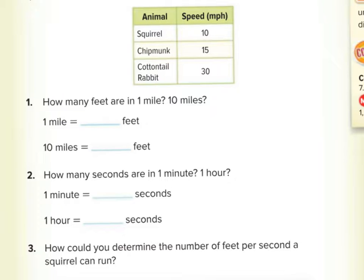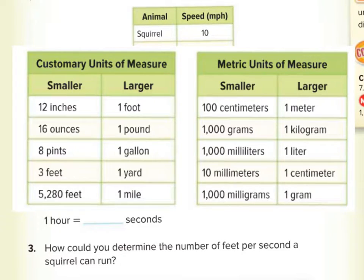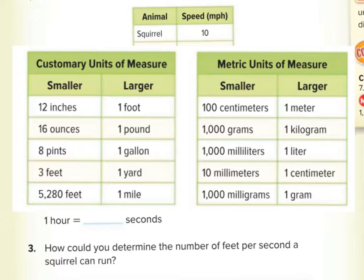What about 10 miles? This is where we have to do a conversion of units. We need to know this table of conversion — customary units and metric units — for measuring short distances in two different systems. The customary units measurement is used in the United States. When we look at the American system, they measure small distances using feet, which is 12 inches.